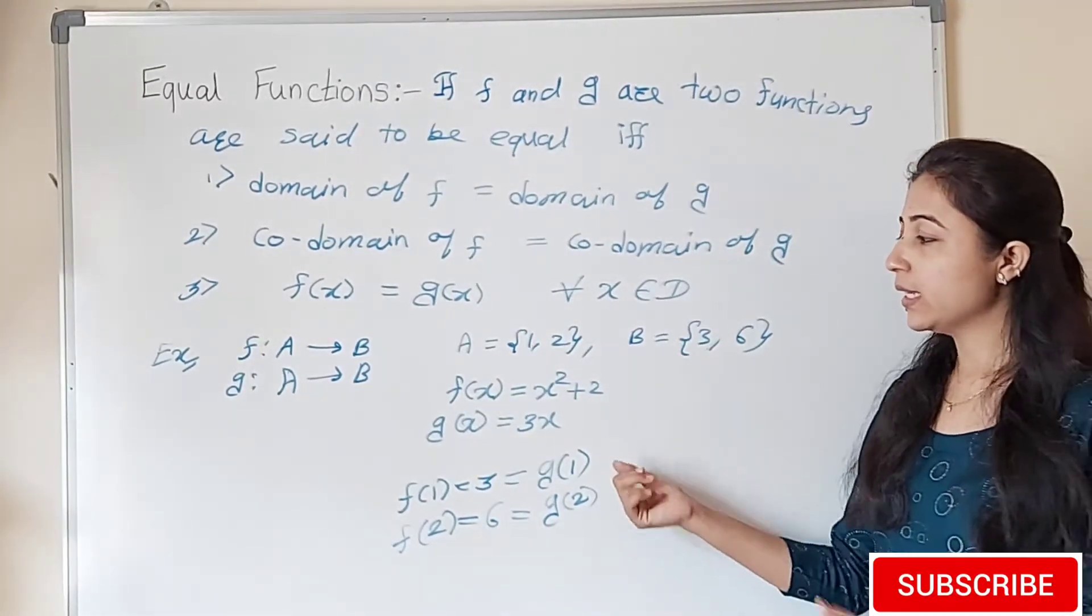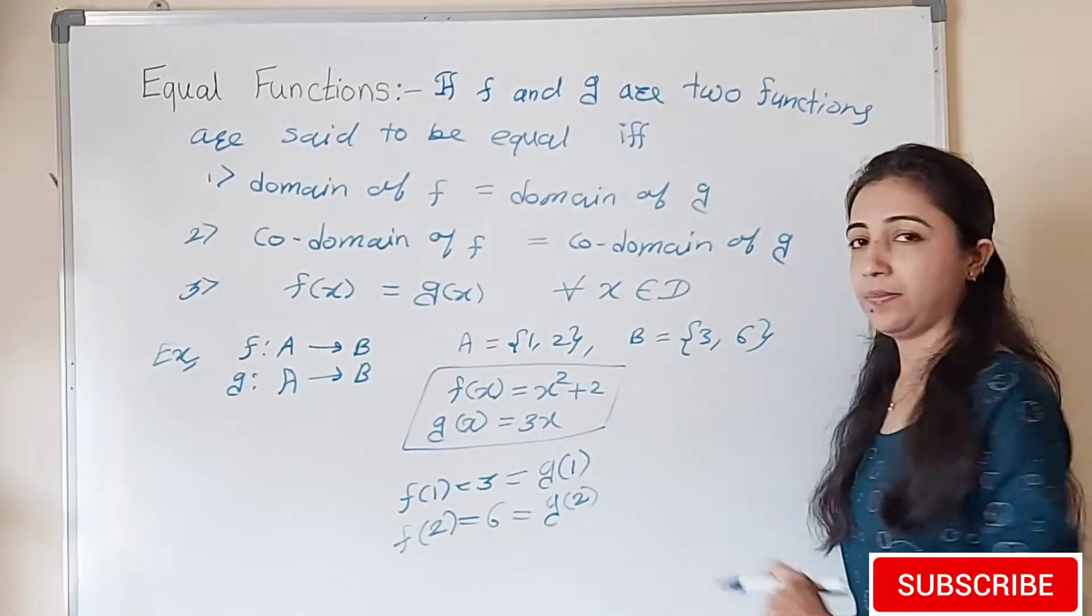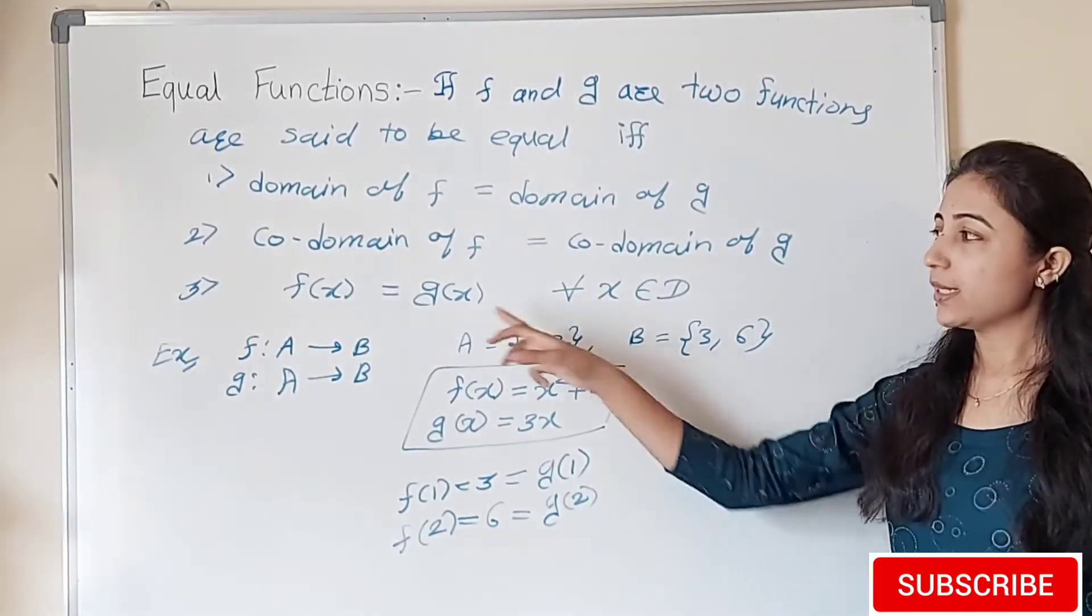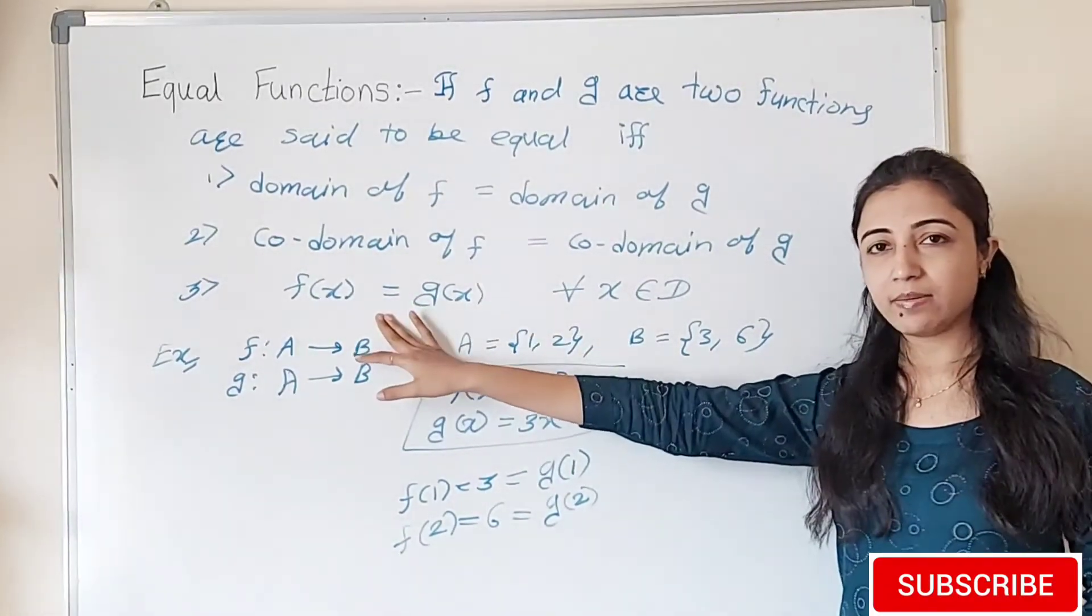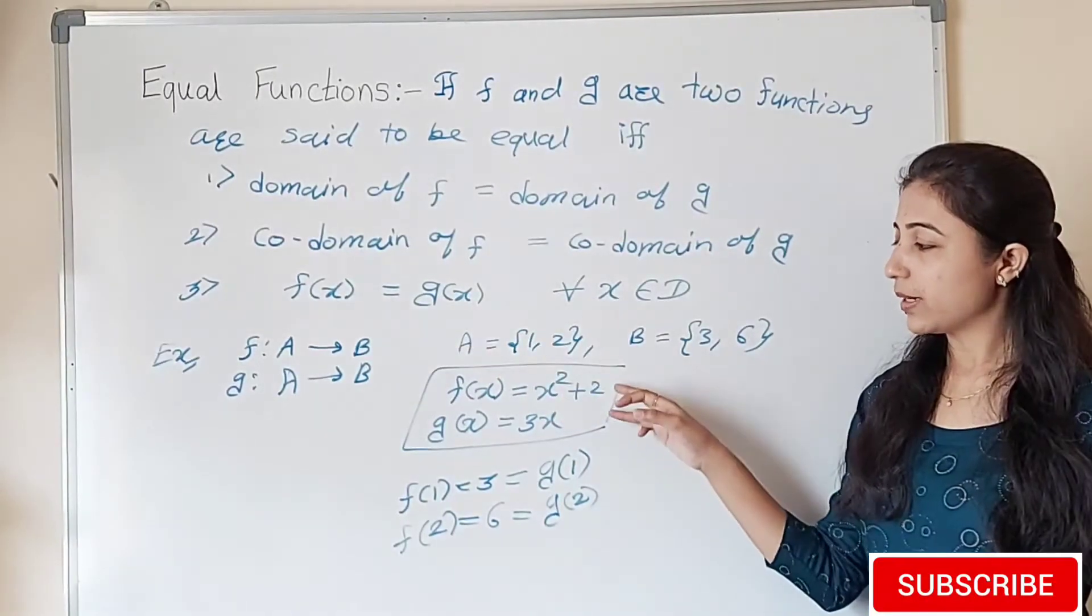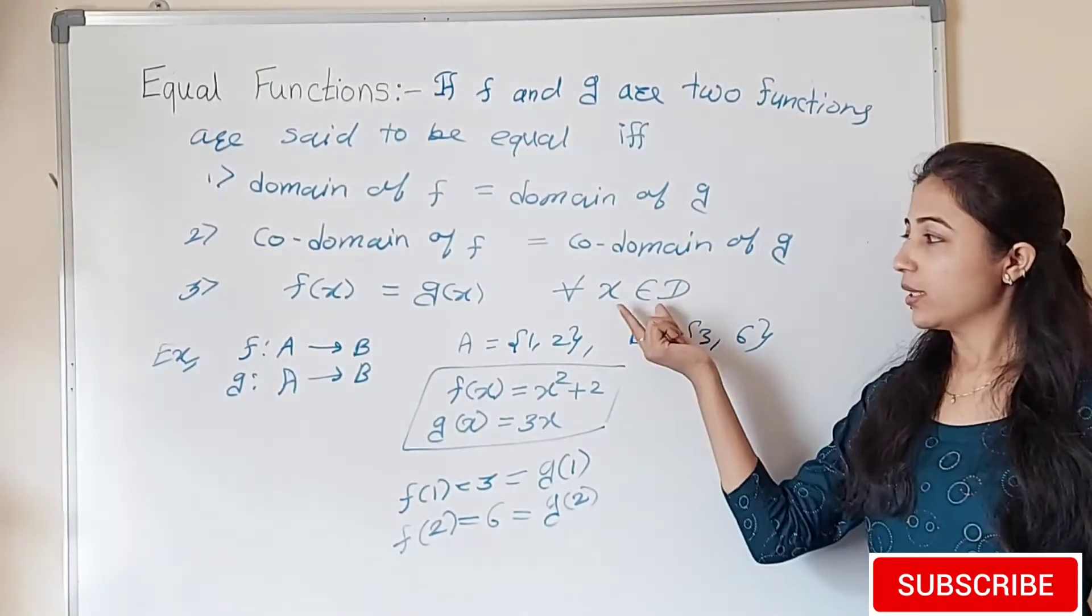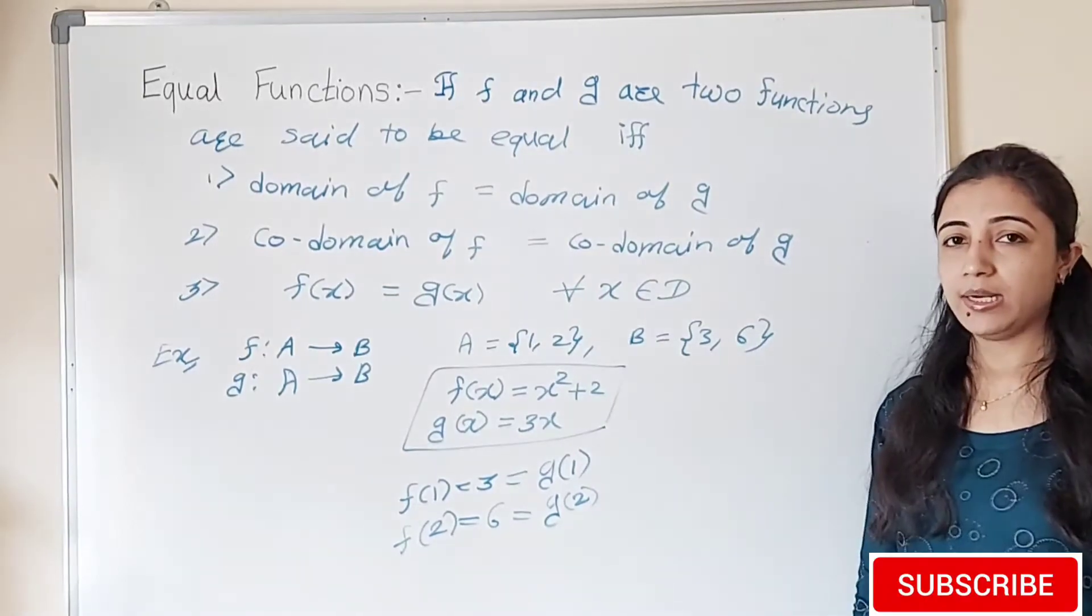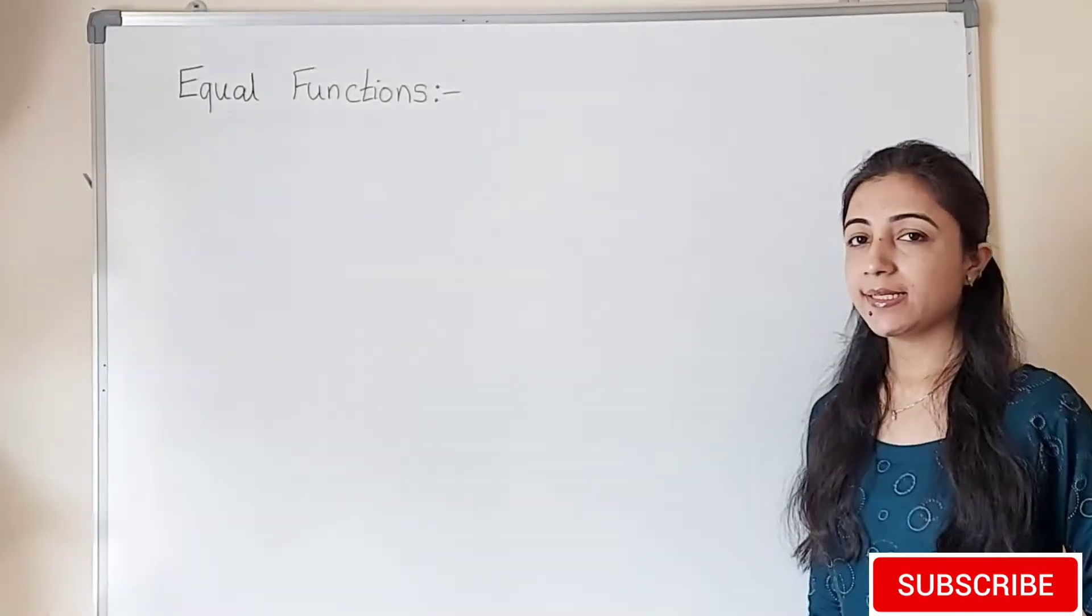f(1) equals g(1), f(2) equals g(2). That means this condition holds for all x belonging to d. So if all three conditions hold, that means we can say these two functions f and g are equal. It's not necessary that they are defined exactly the same way, but if respective images are the same in the given domain, then we can say two functions are equal.